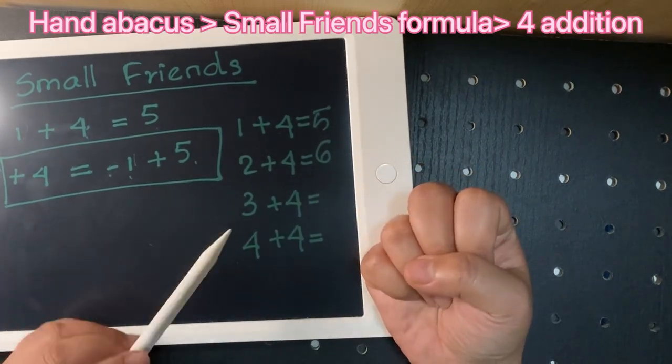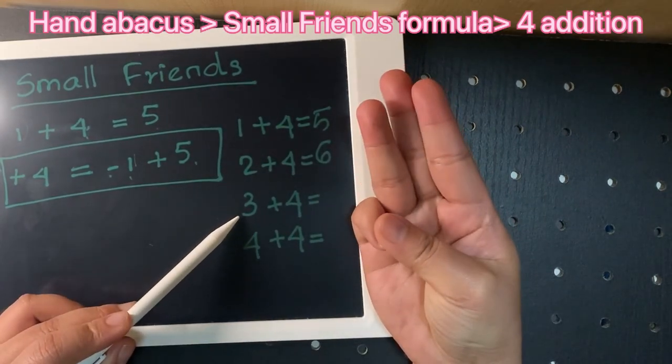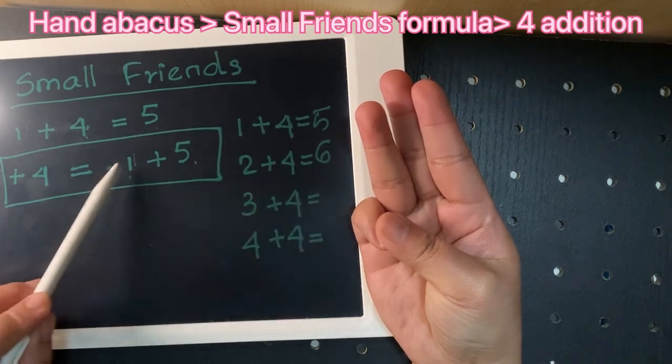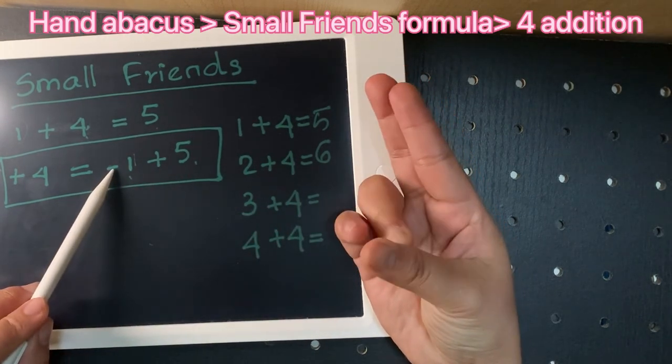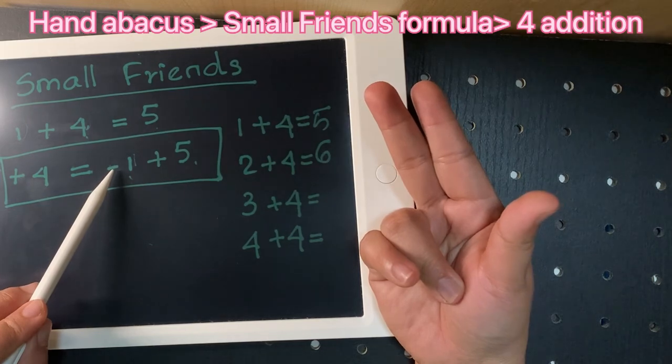Three plus five: minus one plus five. Answer is seven.